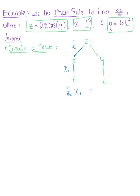Plus our second branch here — this is the derivative of the function connecting z to y, so the partial derivative of f with respect to y. And then this second branch is the derivative of y with respect to t. We take the product of those: the partial derivative of the function with respect to y, times the derivative of y with respect to t.